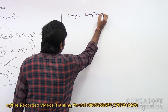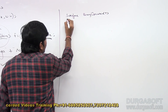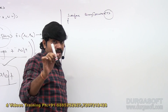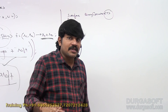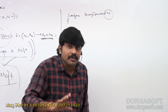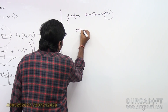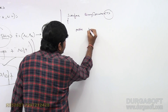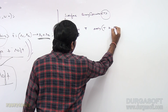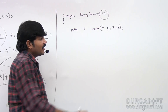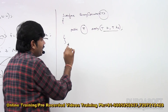Now observe the BinaryOperator interface: BinaryOperator of T. How many type parameters? Only one. This single type parameter T is the first input type, the second input type, and also the return type. The apply method is: public T apply(T t1, T t2). Both inputs are T type and the return type is also T type only.